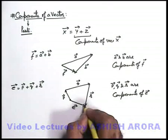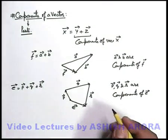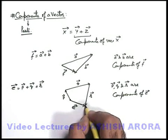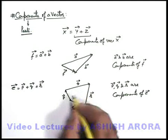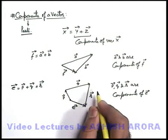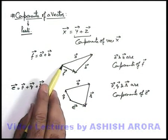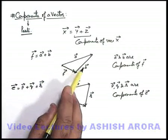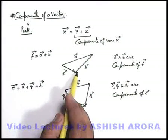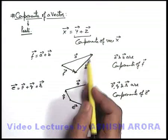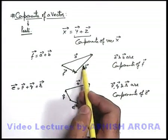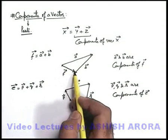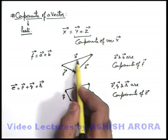A vector can have any number of components. We can also state that a vector can have a magnitude lesser than any of its components. If we look at this situation, the magnitude of the resultant vector is the sum of a vector and b vector. Geometrically, we can see that the length of a vector as well as b vector are both more than the length of f vector. So the resultant vector has a magnitude less than both of its components.